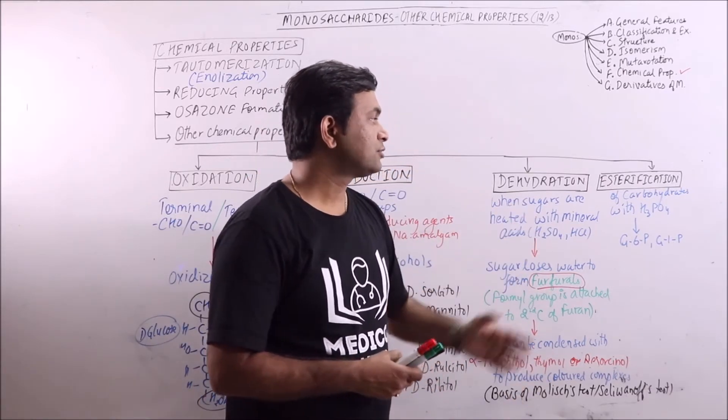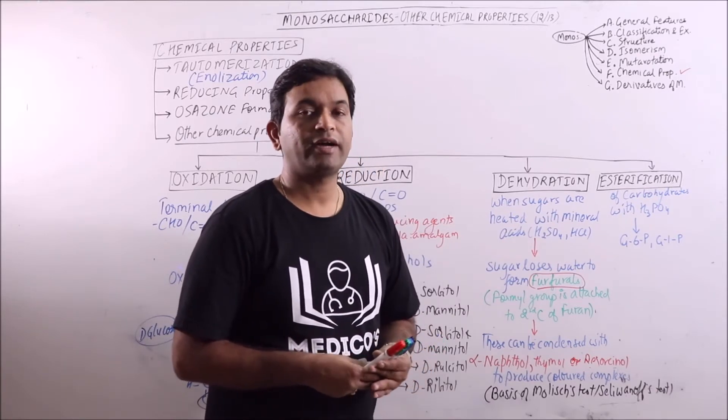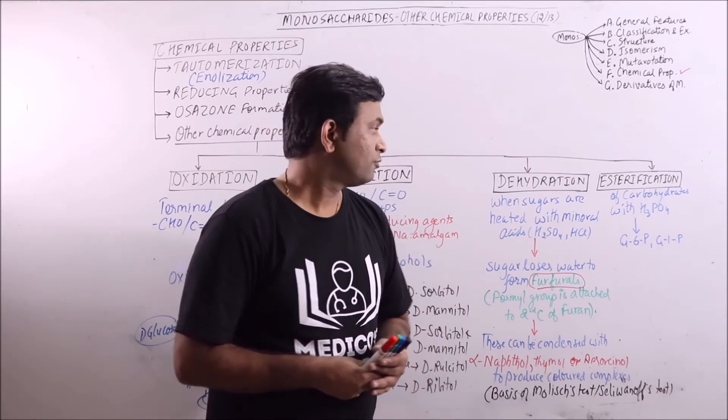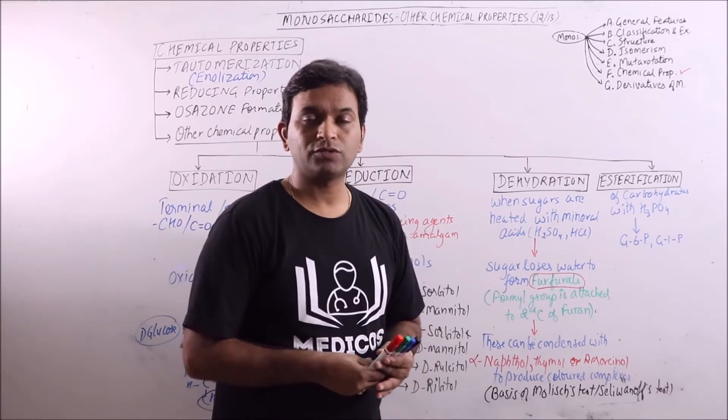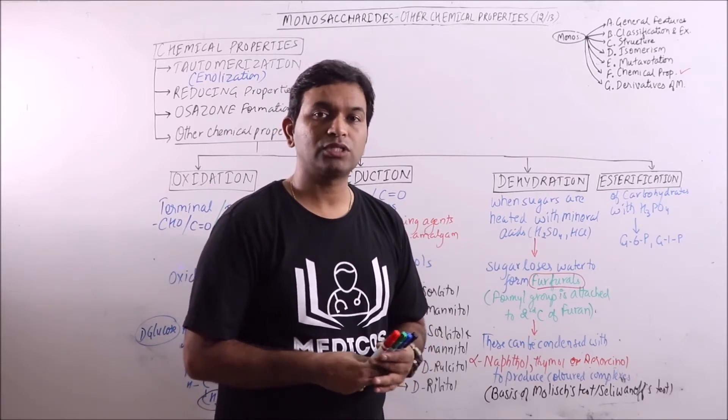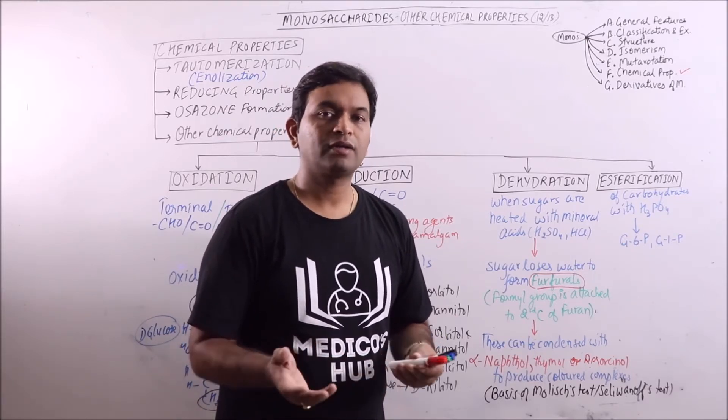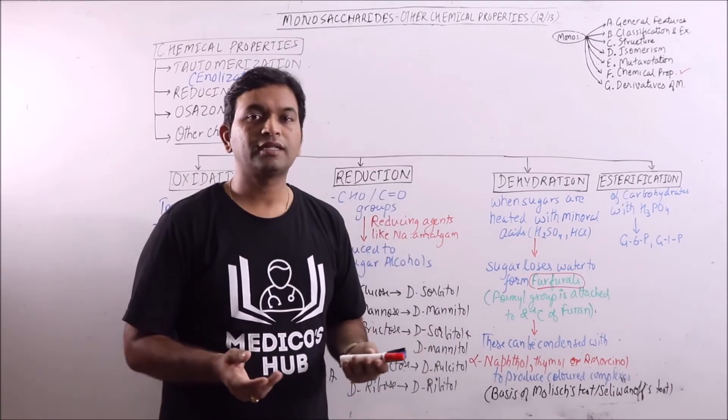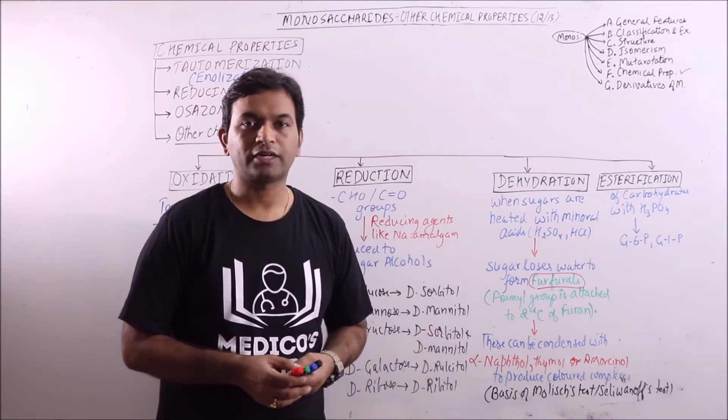Now the last one is esterification. When carbohydrates are esterified with acids like phosphoric acid, then glucose-6-phosphate, glucose-1-phosphate like compounds are formed which can enter further metabolic reactions. So these are the chemical properties of monosaccharides.